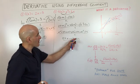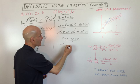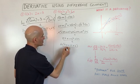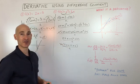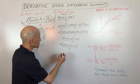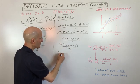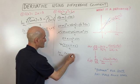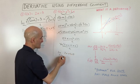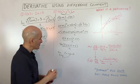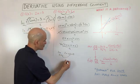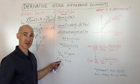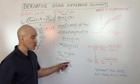You can factor out an h in the numerator, leaving (2x plus h plus 2) divided by h. The h's cancel out. Since we're finding the limit as h approaches 0, we substitute h equals 0, so that term disappears, and we're left with 2x plus 2. So f prime of x, which represents our derivative, equals 2x plus 2.